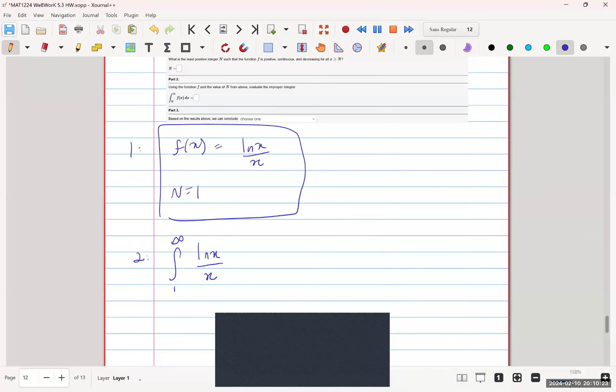We are going to use u substitution once again, where u is equal to ln(x), and du is equal to 1 over x dx. So that just leaves us with... I keep forgetting my dx.